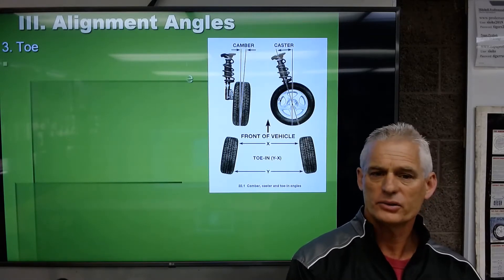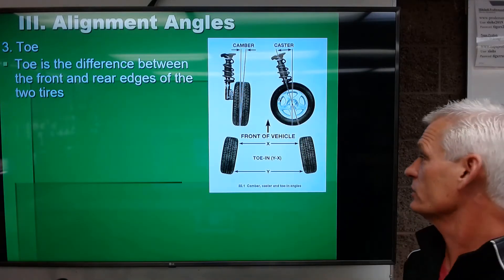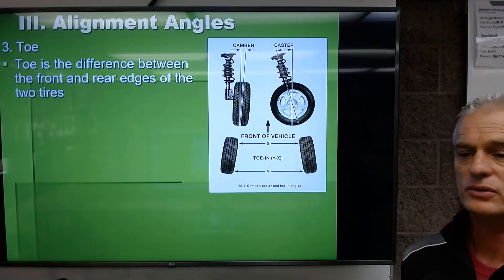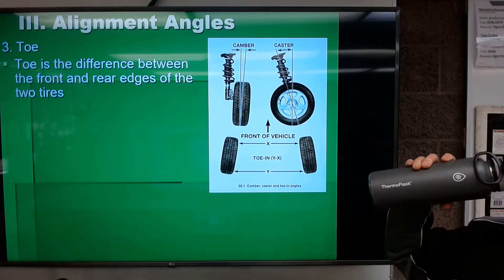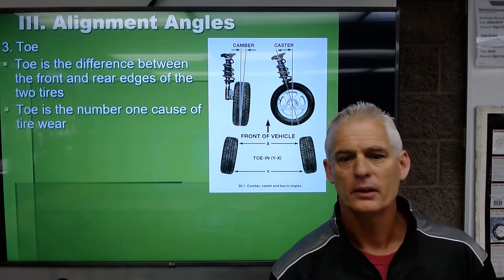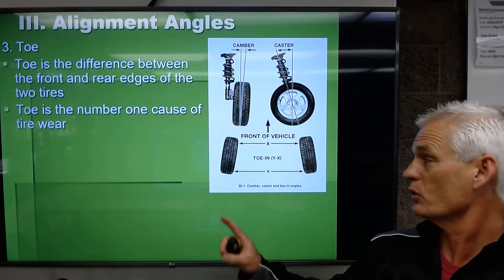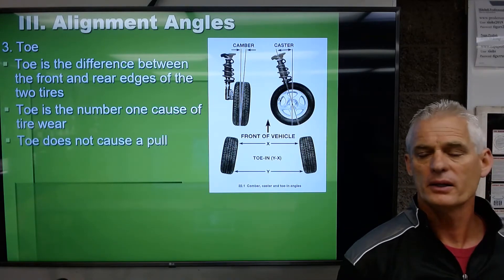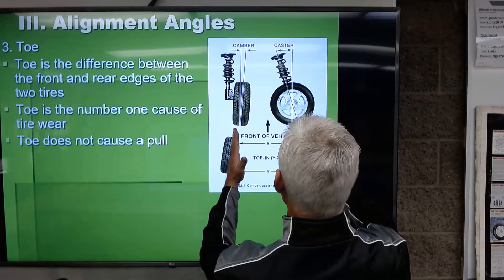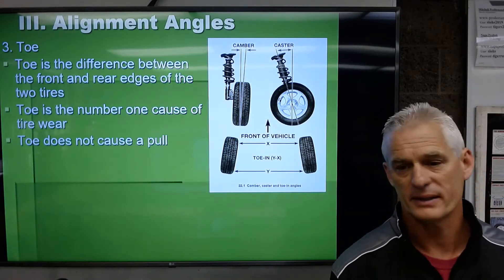Toe is the difference between the front and rear edges of the two front tires. Toed in — or pigeon-toed — means the fronts of the tires point inward. Toe is the number one cause of tire wear; a misadjusted toe setting scrubs rubber off as the tire rolls sideways while going straight. However, toe does not cause a pull because the connected steering causes both wheels to split the difference.